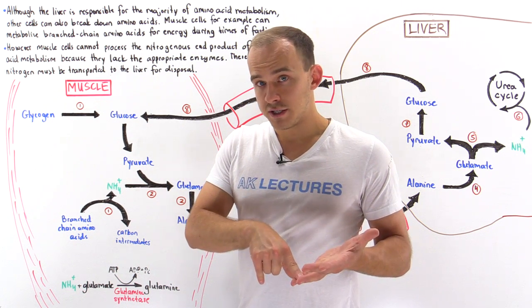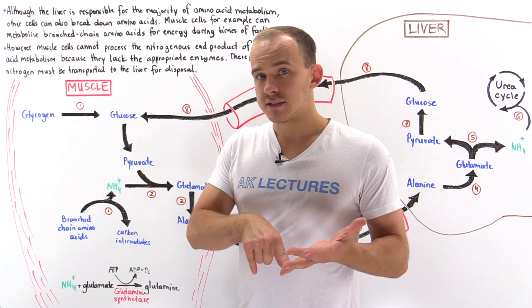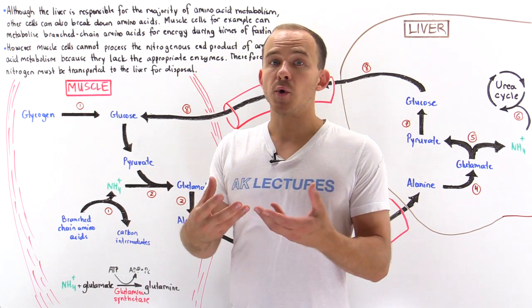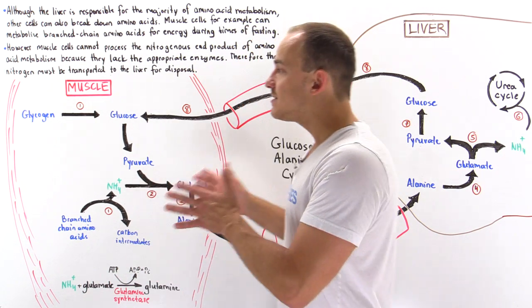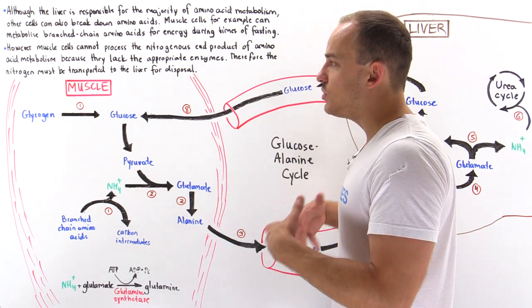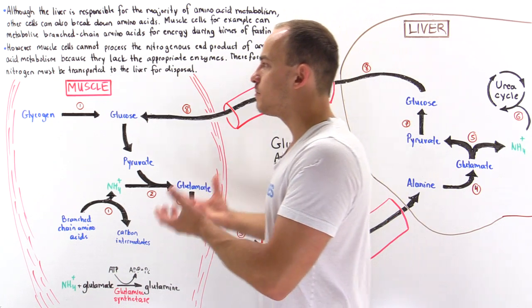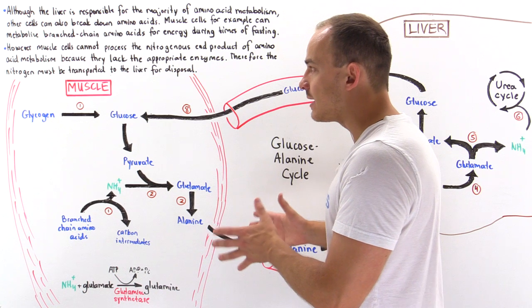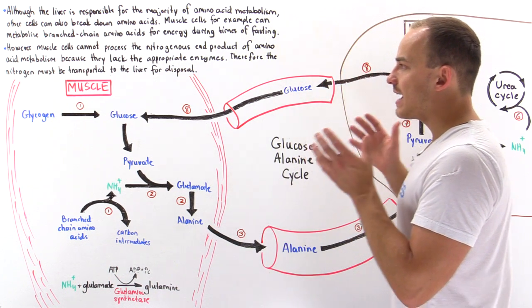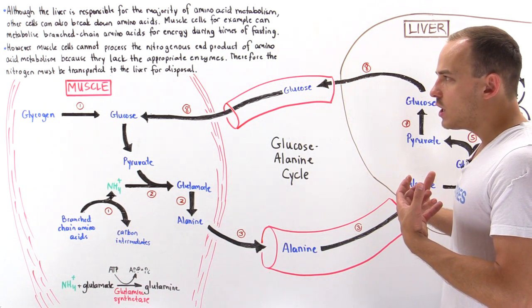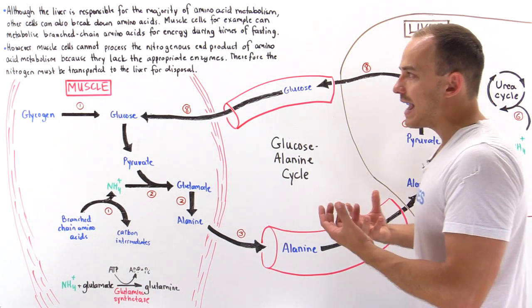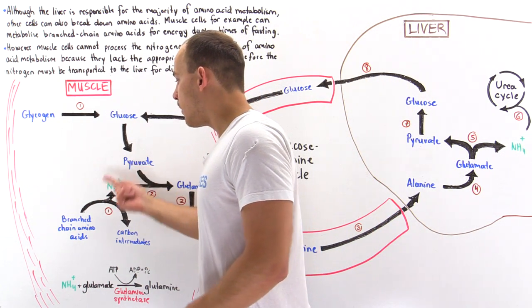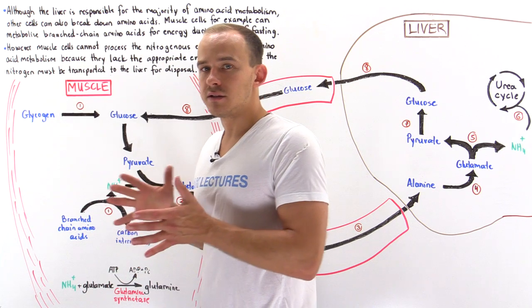Unlike in the liver and, to a smaller extent, in the kidney — where we have the urea cycle to dispose of ammonium — inside skeletal muscle cells we don't actually have a way to dispose of ammonium directly, because the urea cycle does not take place inside the muscle. So our body has two ways by which it can get rid of this ammonium from our skeletal muscle.